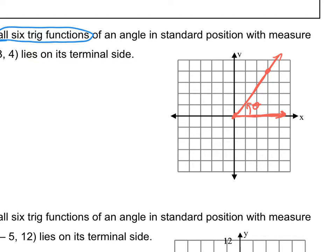Our job is to find the six trig function values of that angle — sine of theta, cosine of theta, and so on. What we do here is drop down a vertical from that point to the x-axis. If we do that, we've created a right triangle, and with that right triangle, we can use SOHCAHTOA to define the six trig functions. Sine is opposite over hypotenuse, and so on.